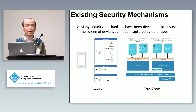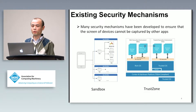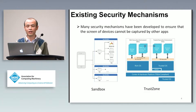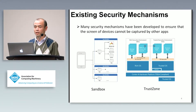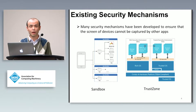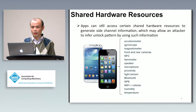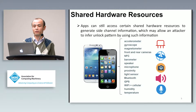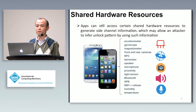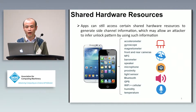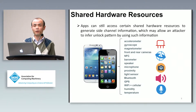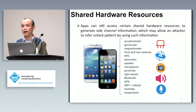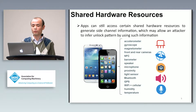There are many security mechanisms that have been developed to ensure the screen of a device cannot be captured by other apps — for example, the sandbox and the trust room. Unfortunately, apps can still access some shared hardware resources, generating side channel information, and an attacker can infer unlock patterns by leveraging such information.